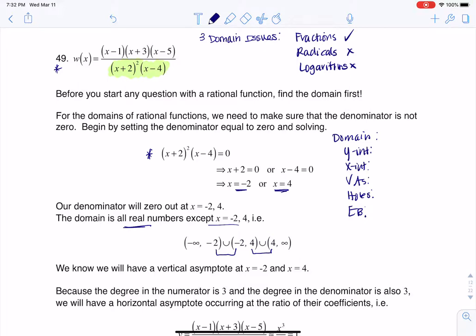Now once you do that, any time you have a domain issue, these will either be vertical asymptotes or holes. So every time you have a domain issue, it'll show up in one of these two traits. I'm just not sure which until I look a little closer at the function.